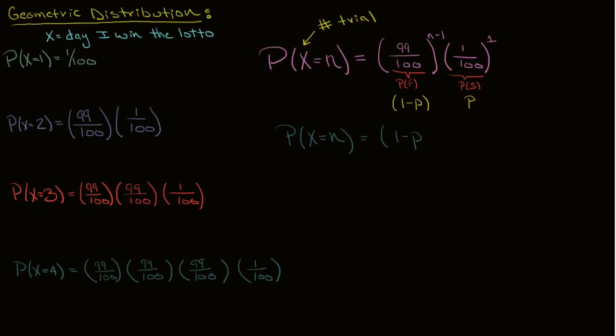the probability that I fail, to the power n minus 1, because I fail n minus 1 times, times p. And I only succeed once. And that's it. We've derived the probability mass function for the geometric distribution.